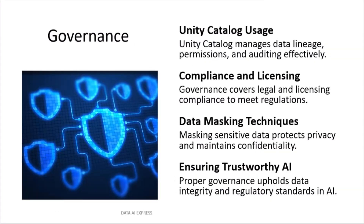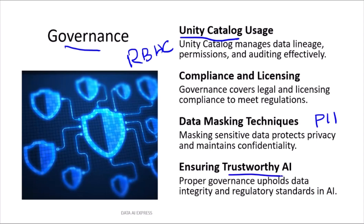When you hear Governance, you should immediately think Unity Catalog. This section is all about Unity Catalog: how does RBAC — Role-Based Access Control — work? What do you do with PII, personally identifiable information? What are the data masking techniques you need to apply? How do you build trustworthy AI? It's only 4 questions, but remember my warning — you must pass this section. Get at least two or three of these four right. If you fail all four, you fail the exam. Don't skip this — these are easy points if you study.